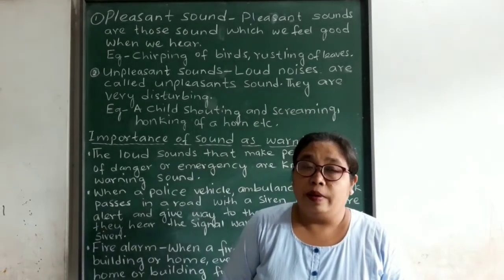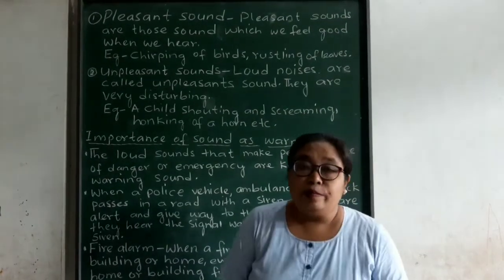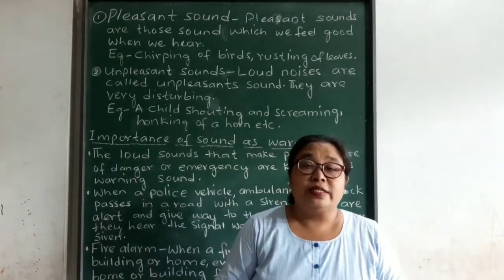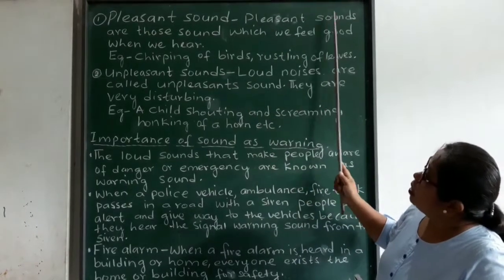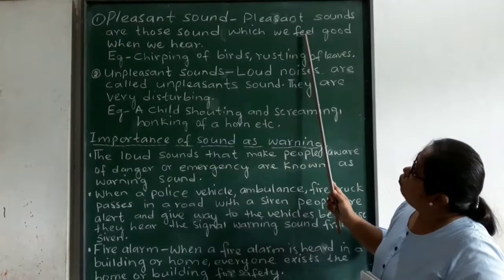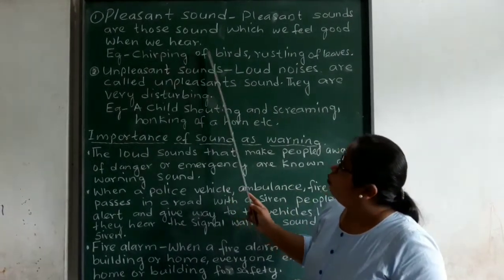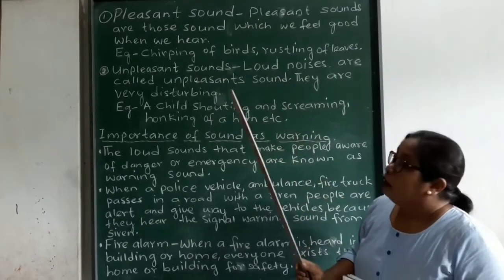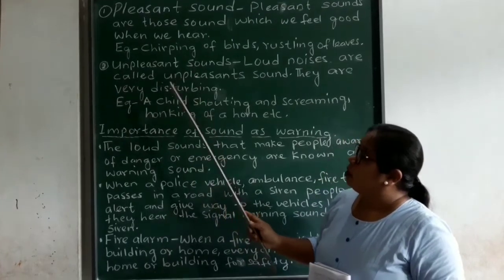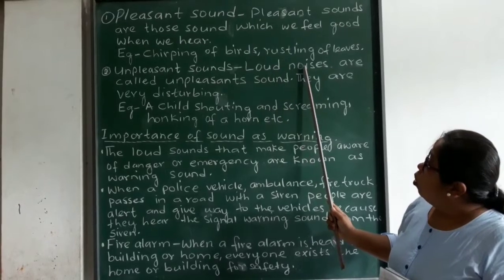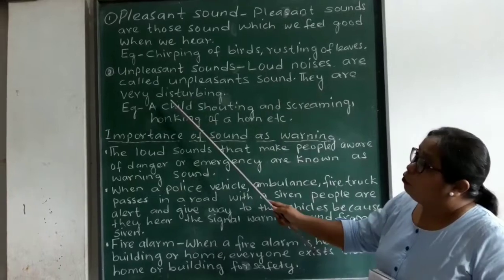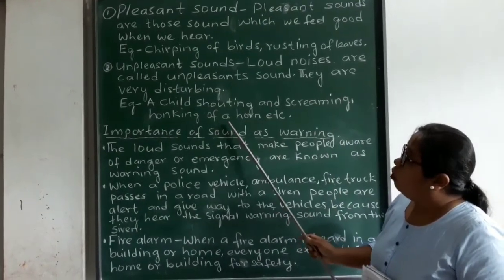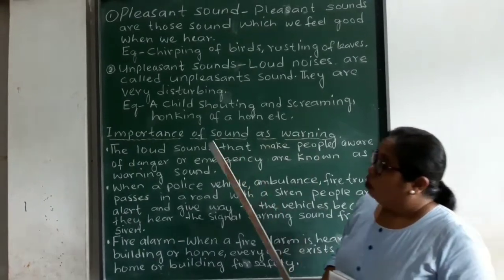Now we are going to discuss about pleasant and unpleasant sounds. There are two types of sounds: pleasant and unpleasant. Pleasant sounds are those which we feel good when we hear, for example chirping of birds and rustling of leaves. Unpleasant sounds are loud noises that are very disturbing, for example a child shouting and screaming, or honking of a horn.